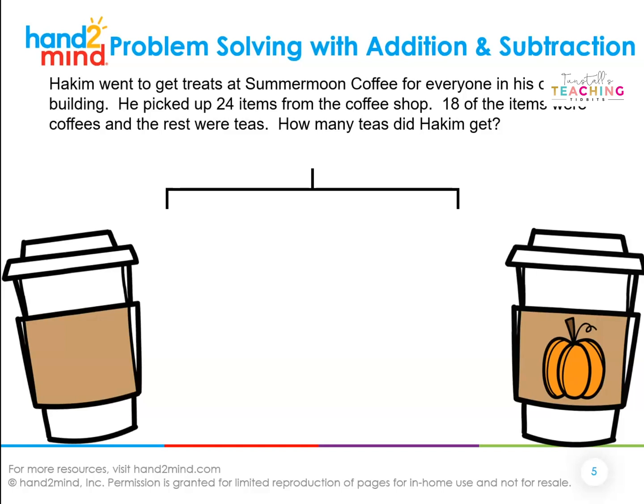What number are we going to put at the top? Is it 24 items and 18 items — are we adding those numbers together to find a whole? No. He picked up 24 items from the coffee shop, so we put 24 there. That's the total — that's how many items he got. Now we need to know the parts. It tells us in the problem: 18 of the 24 were coffees, so 18 is going to go here.